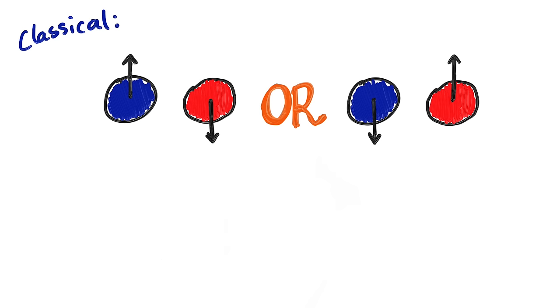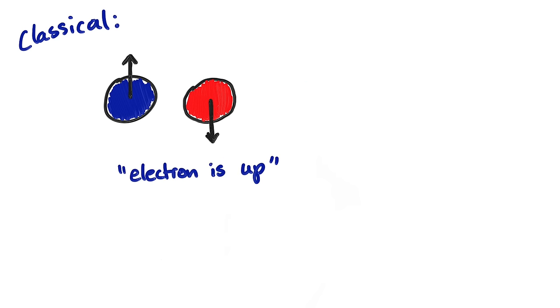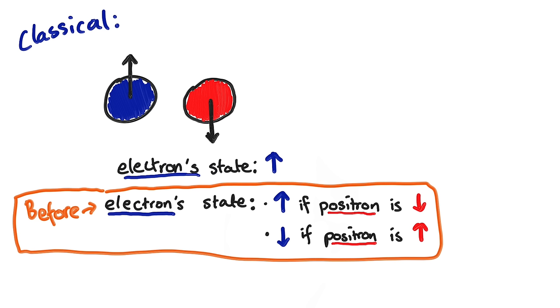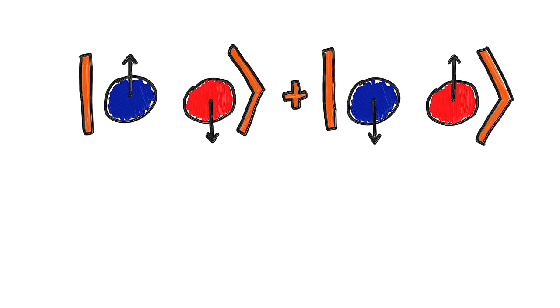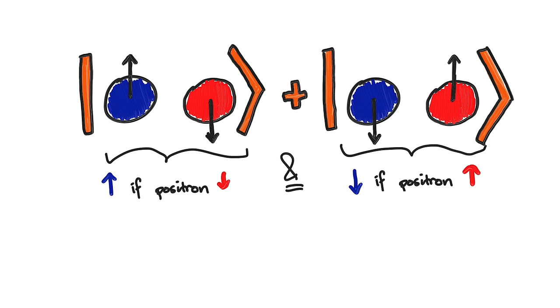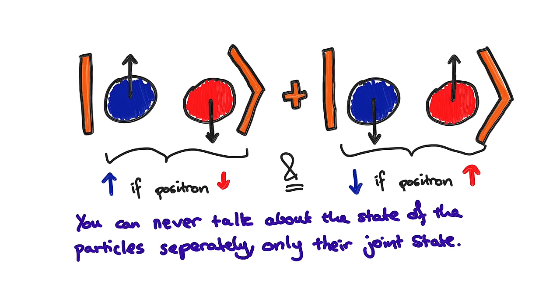Because really, the particles are just doing one thing. Let's say this one. If I knew that, then I could say the electron is up. It's only because I didn't know which case it is that I had to describe them like this. But in the quantum case, there isn't this way out. The particles are apparently doing both of these things, and so there isn't an actual state of the electron that we can talk about. The electron is not actually just up. It's both up if the other is down, and down if the other is up. You can never talk about the state of these particles separately, only their joint state. That's entanglement.